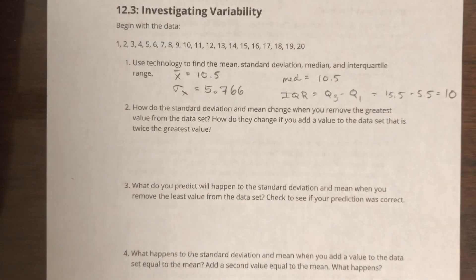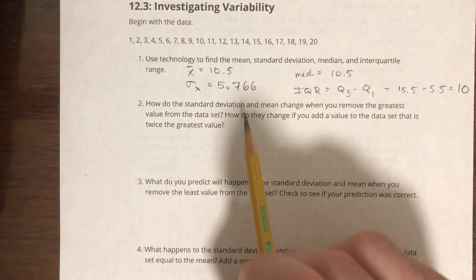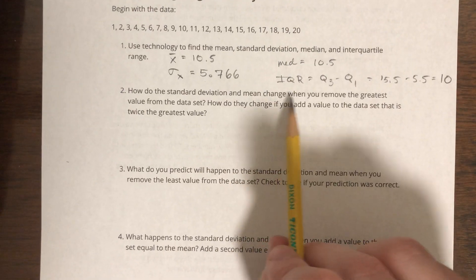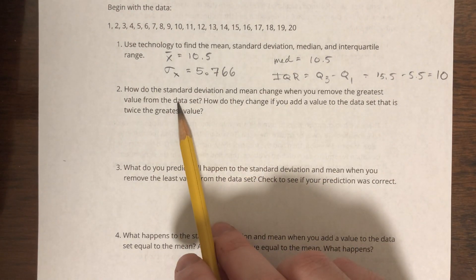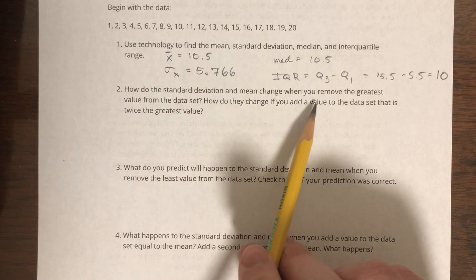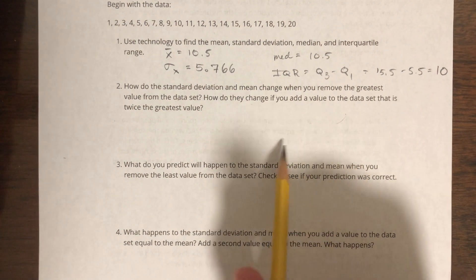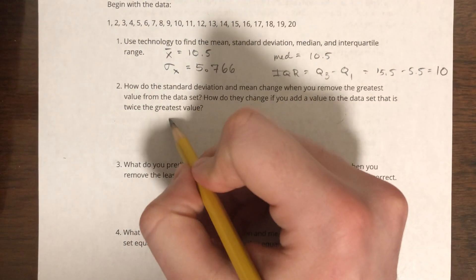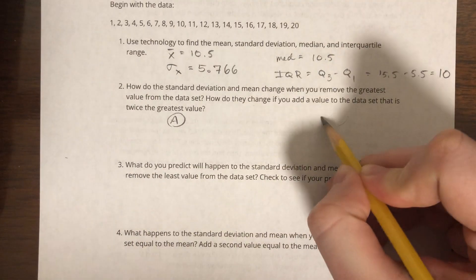Alright, that's all for number one. Number two: how does the standard deviation and mean change when you remove the greatest value from the data set? How do they change if you add a value to the data set that is twice the greatest value?